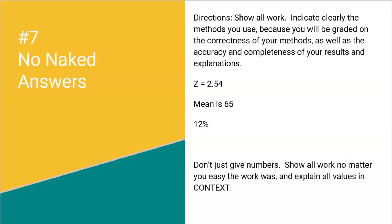Tip number seven: no naked answers. On the FRQs, show all work and clearly indicate the methods you use, because you will be graded on the correctness of your methods as well as the accuracy and completeness of your results. Don't ever just write Z equals 2.54 — show the work: I took my value, subtracted the mean, divided by the standard deviation or standard error. Same thing with a mean: don't just say the mean is 65, explain how you got it.